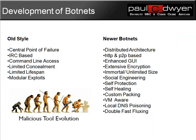Now let's look at the development of botnets — the difference between old style and newer style, and where the trends are. The old styles tend to have a central point of failure. They were IRC-based, so they had continuous connections, making them easier to identify. They had command line access, which is more difficult than today's ones. They had limited concealment functionality and limited lifespan. They were able to handle modular exploits, so they could do updates and send them out to perform different types of attacks.